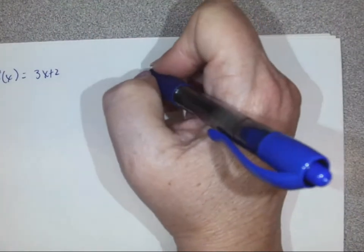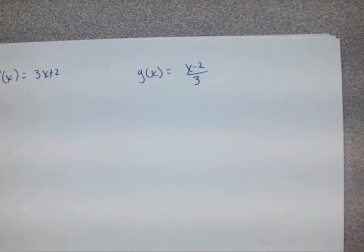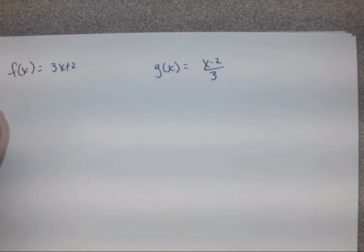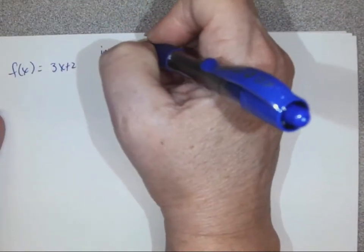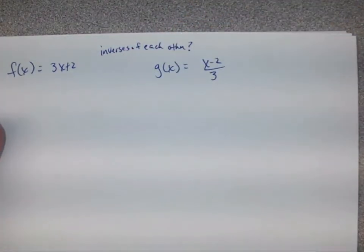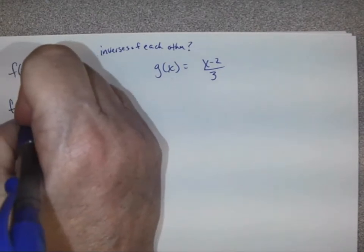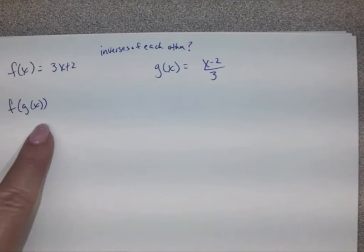So if f(x) equals 3x plus 2 and g(x) equals (x minus 2) over 3, we want to know: are they inverses of each other? We need to find f(g(x)) and determine if it equals x.